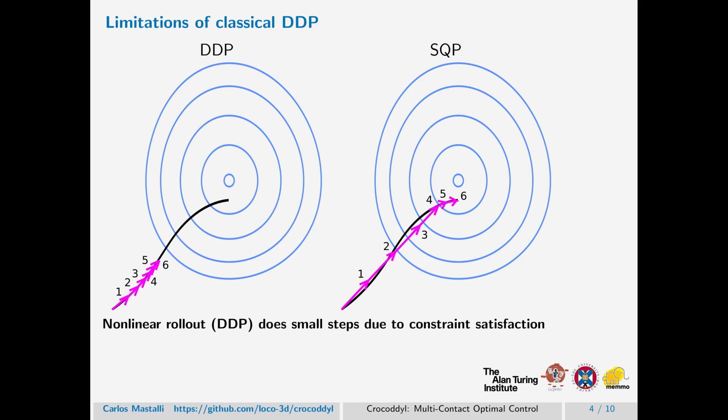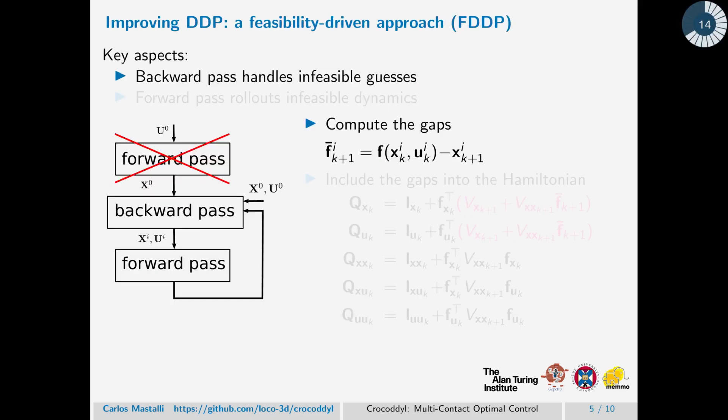Our feasibility-driven algorithm is answering this question by handling the feasibility of the problem. The key aspect of our method is first a backward pass that handles infeasible guesses, where the infeasible guesses are described as gaps in the dynamics or defects, as commonly described in multiple shooting methods.